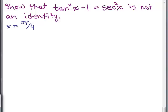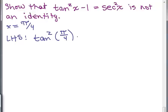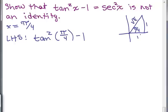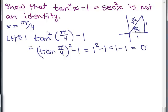Let's do the same problem using a different value for X — somebody else might try π/4. For the left-hand side: tan²(π/4) minus 1. For π/4, thinking of the 1-1-√2 triangle, the tangent is opposite over adjacent, which is 1. So we have 1 squared minus 1, which is 1 minus 1, which equals 0.